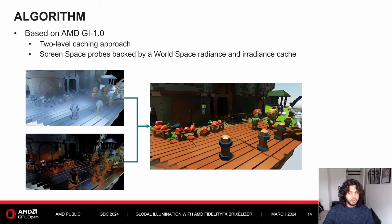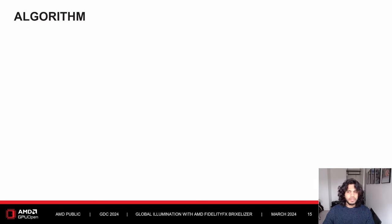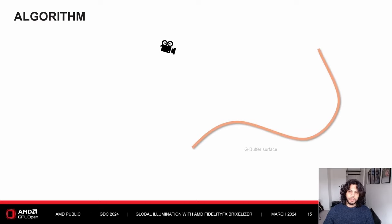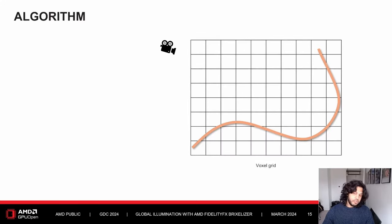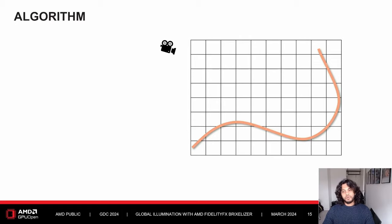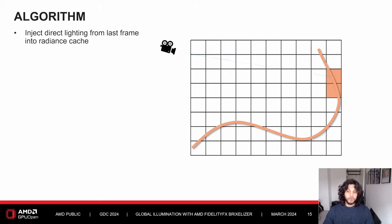Similarly, we use screen space probes backed by a world space radiance and irradiance cache. Here you can see a cross section of the G-buffer surface and the voxel grid surrounding the geometry. The voxels that contain actual geometry are highlighted in green. We start off by populating our radiance cache — for each primary ray hit point, we find the corresponding brick, reproject the direct lighting from the previous frame, and inject it into the radiance cache.